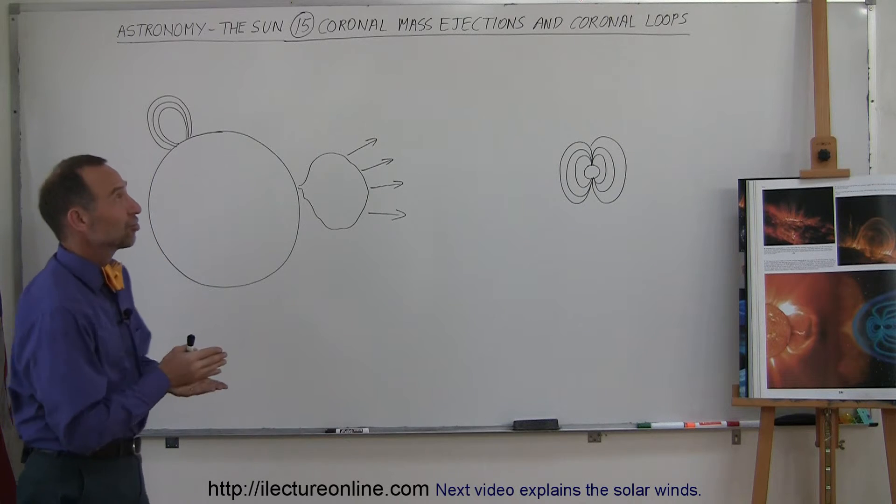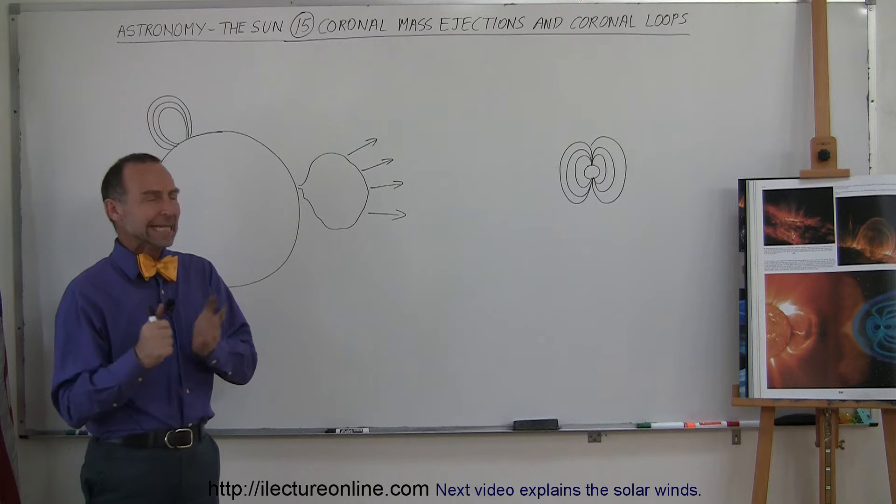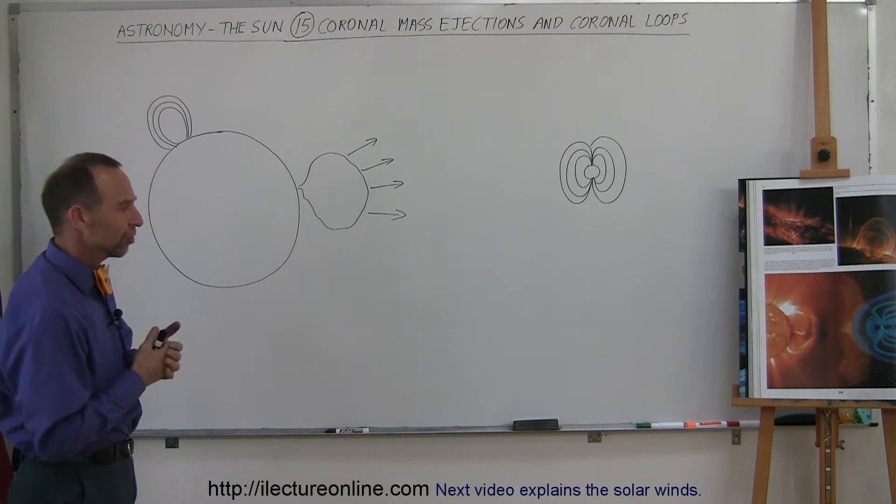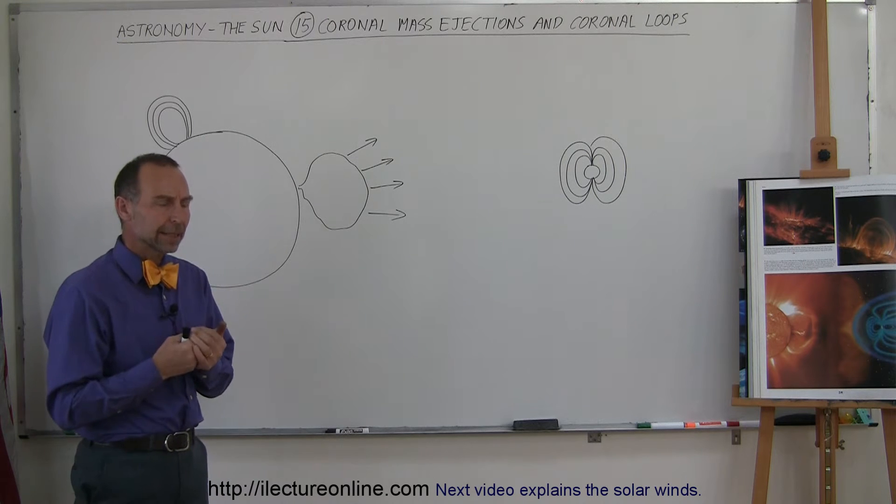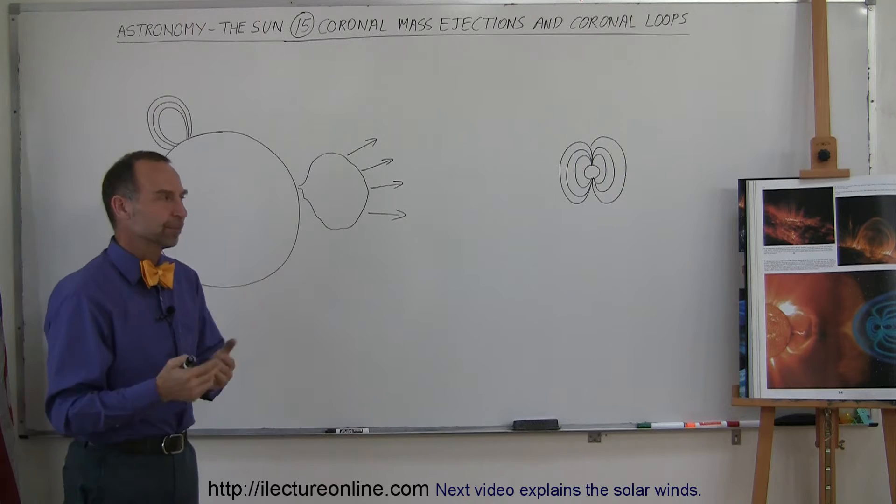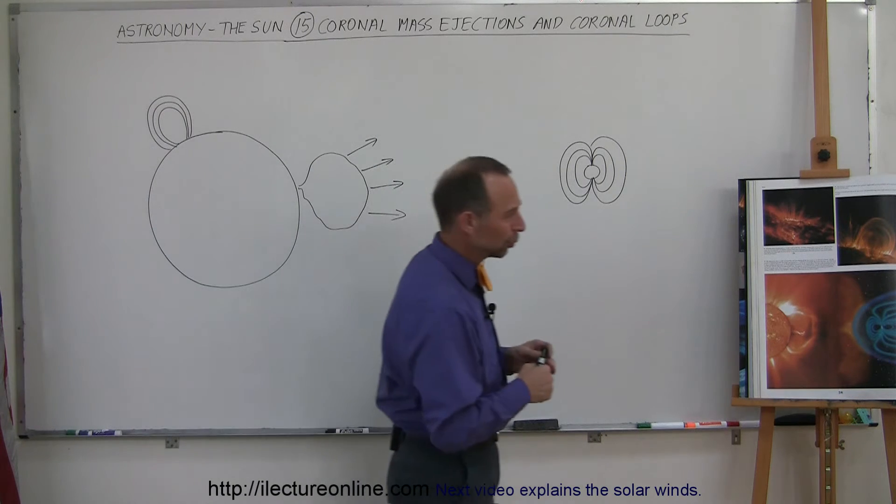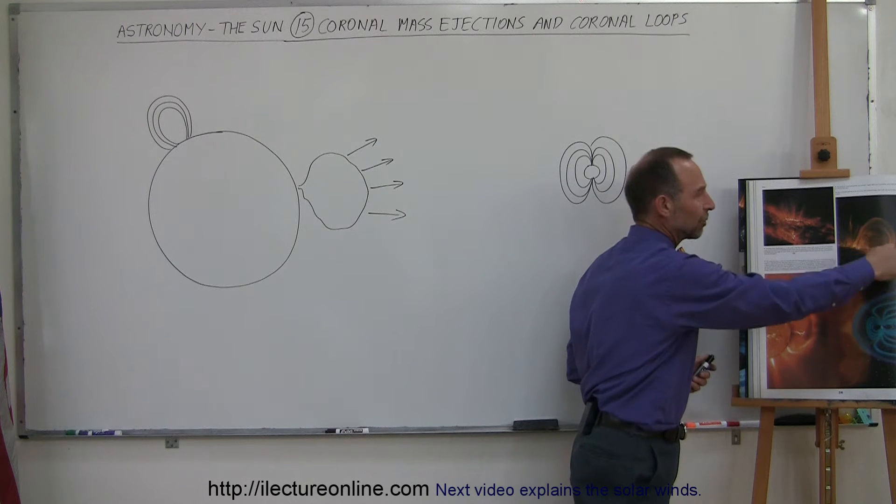Now we're going to talk about coronal mass ejections and coronal loops. Let's start with coronal loops because they're really neat things. And there's actually some film footage on the internet that you can actually watch coronal loops in action. So here I have a picture of what coronal loops look like. Here's the surface of the sun.